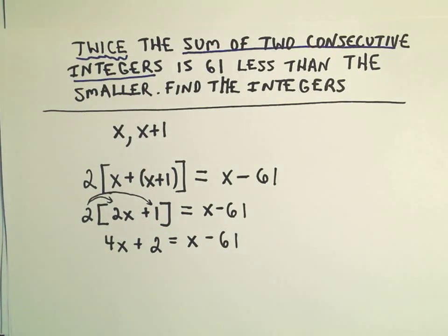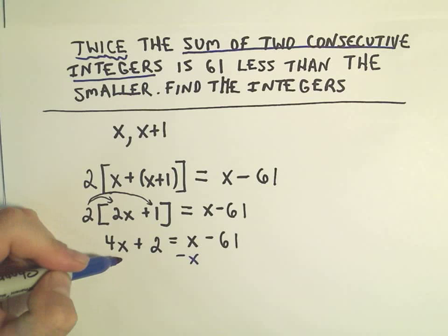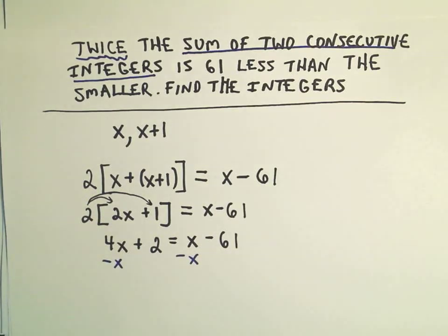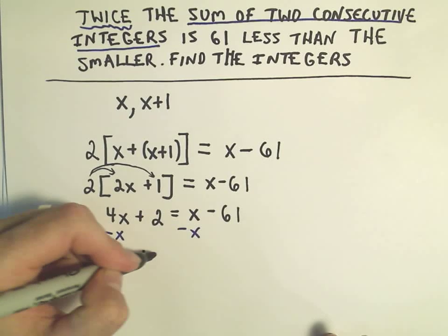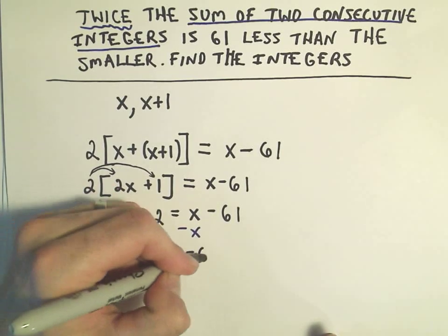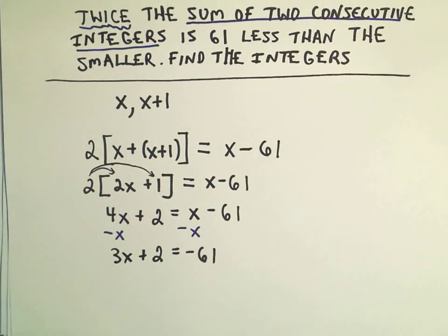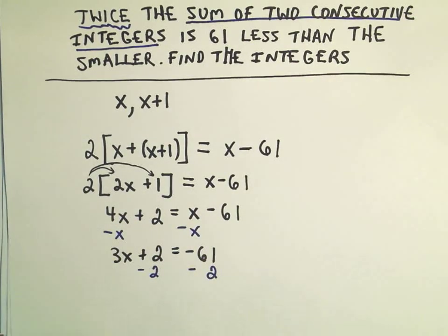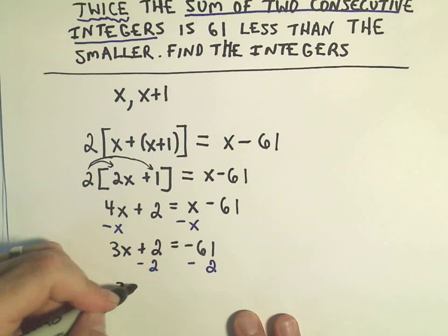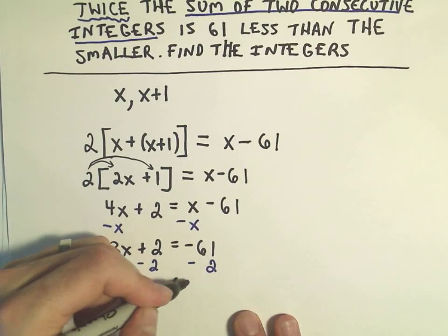Now I'm going to put all my x's on the left side. I'll subtract x from both sides. Then we'll be left with 3x plus 2 equals negative 61. Then I'm going to move the positive 2 over by subtracting 2 from both sides. Now we're left with 3x equals negative 63.